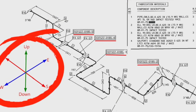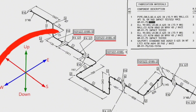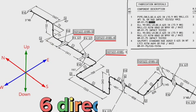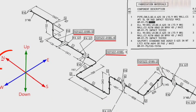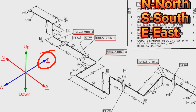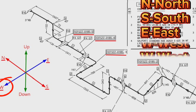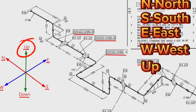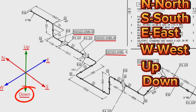Every pipe drawing has a directional sketch. By studying these directions we can easily read pipe isometric drawings. There are six directions: N means North, S means South, E means East, W means West, Up means up, and Down means down. Let's try to read this pipeline isometric using these directions.